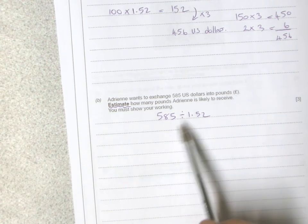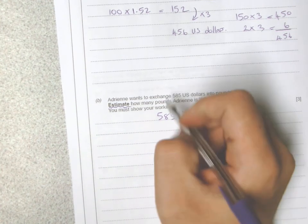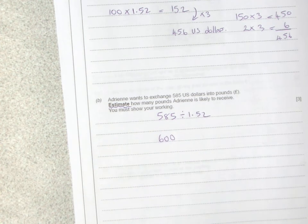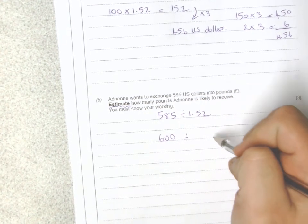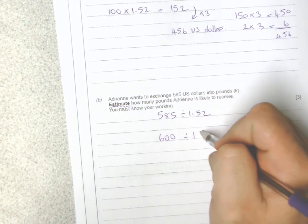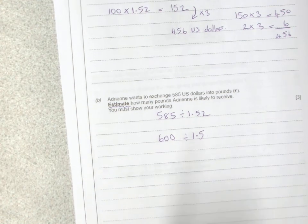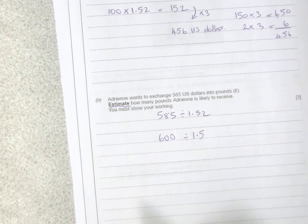So 585 would become 600, and 1.52 I would approximate to 1.5. I think 1.52 is more sensible to round to 1.5—that's what the examiner would look for. 1.52 is a bit too difficult, but 1.5 is a lot more acceptable.